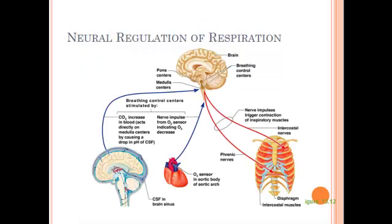Here's a picture showing the relationship between all these control mechanisms. You can see the nerves coming down from the brain — the phrenic nerve and the intercostal nerves — affecting the intercostal muscles and the diaphragm to help us breathe. You can also see the breathing control sensors in the medulla and in the pons and how they're related.